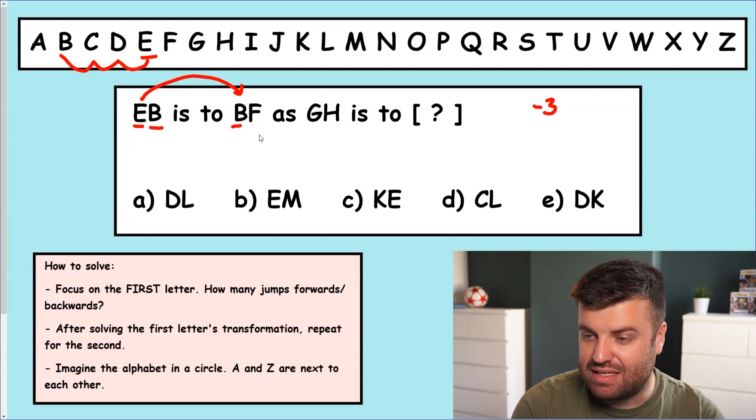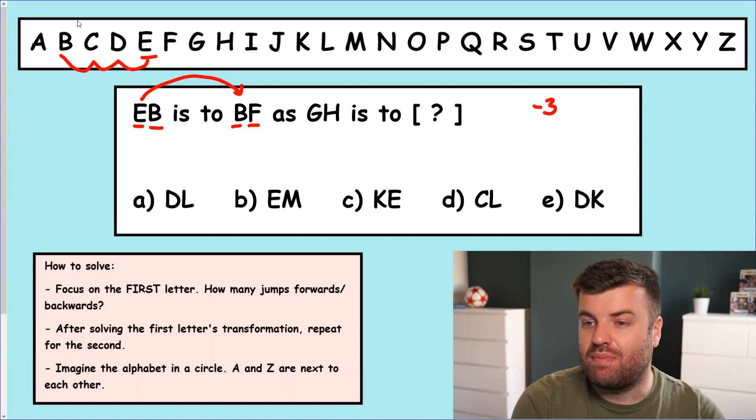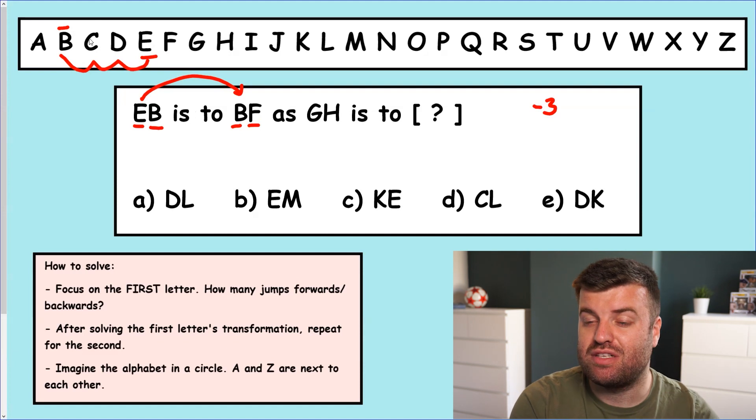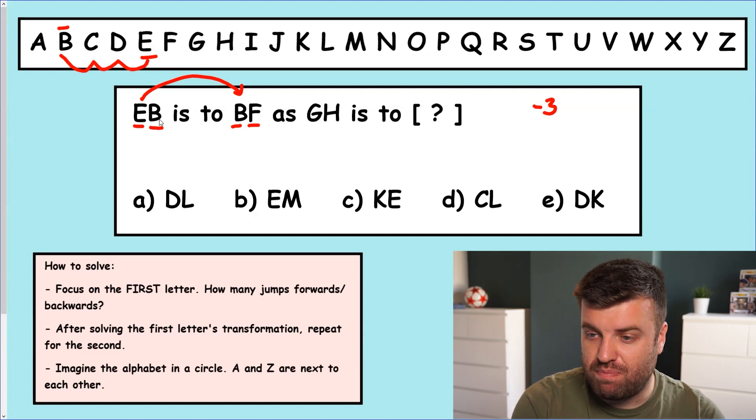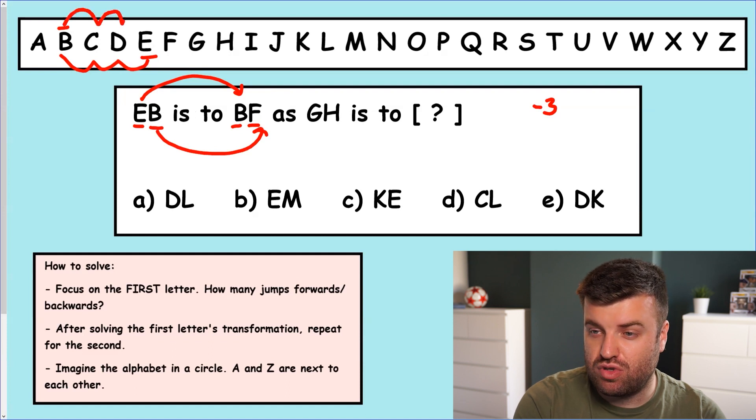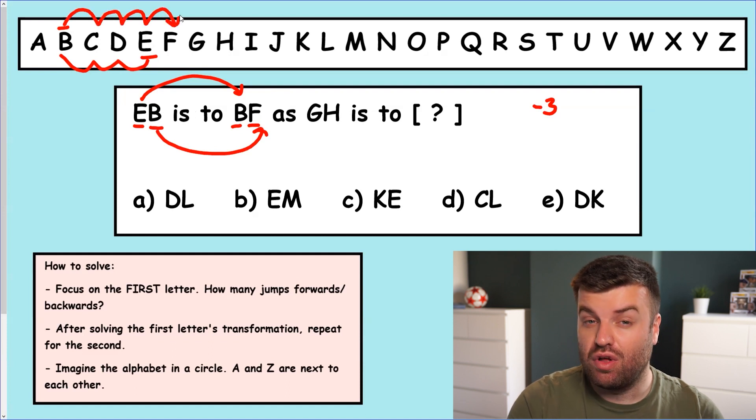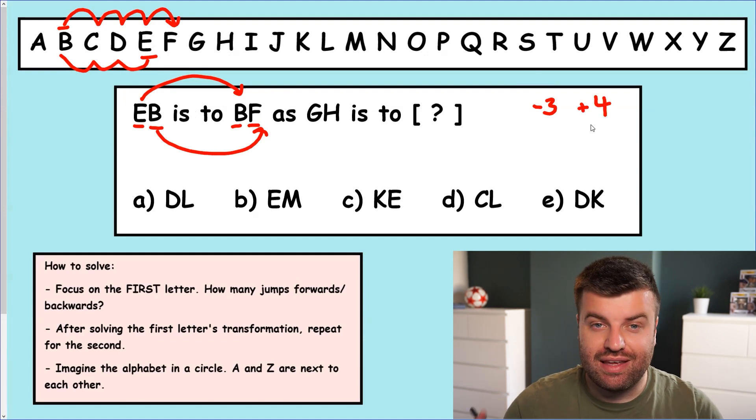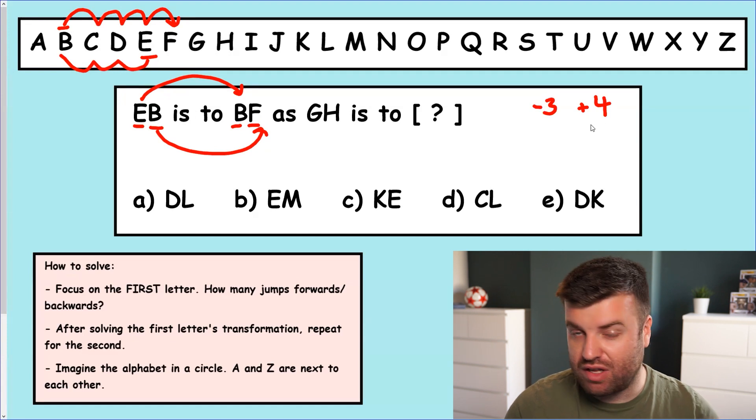So we've got the first code is minus three. The second code for the second letter is B to F. So we go back to the top of B. I'm going to go to the top now just so I'm separating this out a bit so it's clearer. And I'm going to jump from B to F. So B to F is one, two, three, four forward. So we had minus three for the first letter. The second letter is plus four. It's as simple as that. Now we've got our code. We can solve for the answer.